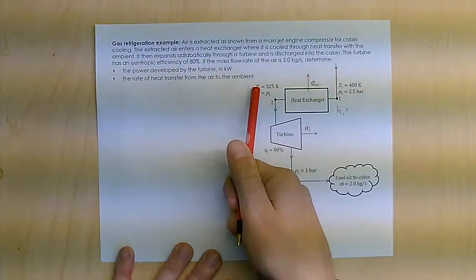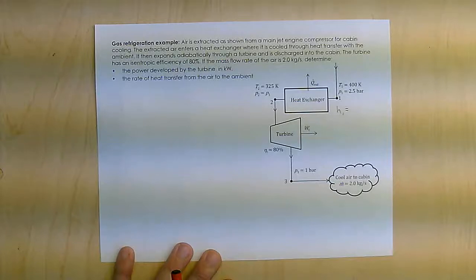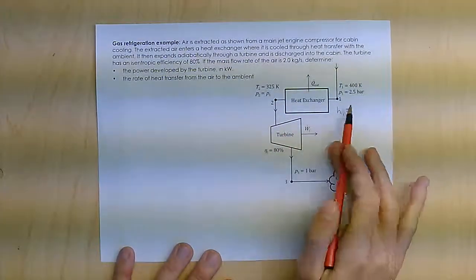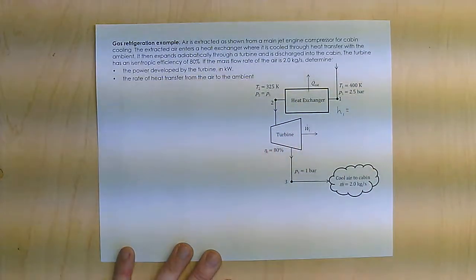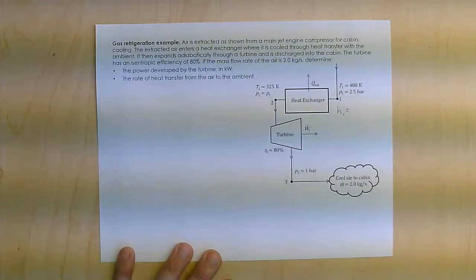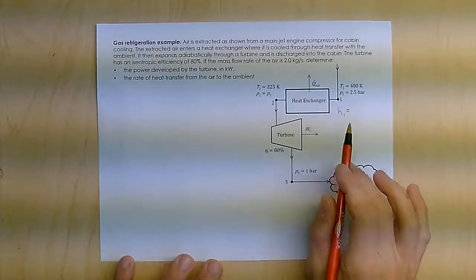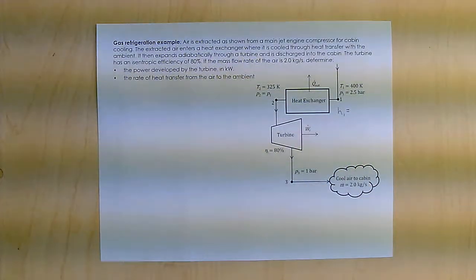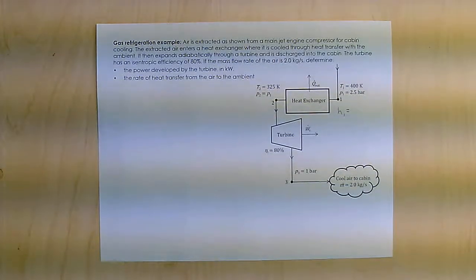So what I'm going to do is I'm going to go through and prepare all of these values here. As long as I know my temperature, I should be able to find H without much trouble. So we'll start here at state 1 at 400 kelvin.